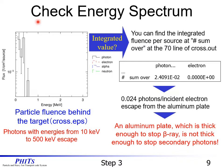We can see the photon penetration. Let's check the energy spectrum. We can check particle fluence behind the target from cross.eps as shown in this figure. From the result, you can find that photons with energies from 10 keV to 500 keV escape from the target. The integrated fluence per source is found at the hash sum over line 70 of cross.out. The result shows that 0.024 photons per incident electron escape from the aluminum plate. We can confirm that an aluminum plate thick enough to stop beta rays is not thick enough to stop secondary photons.